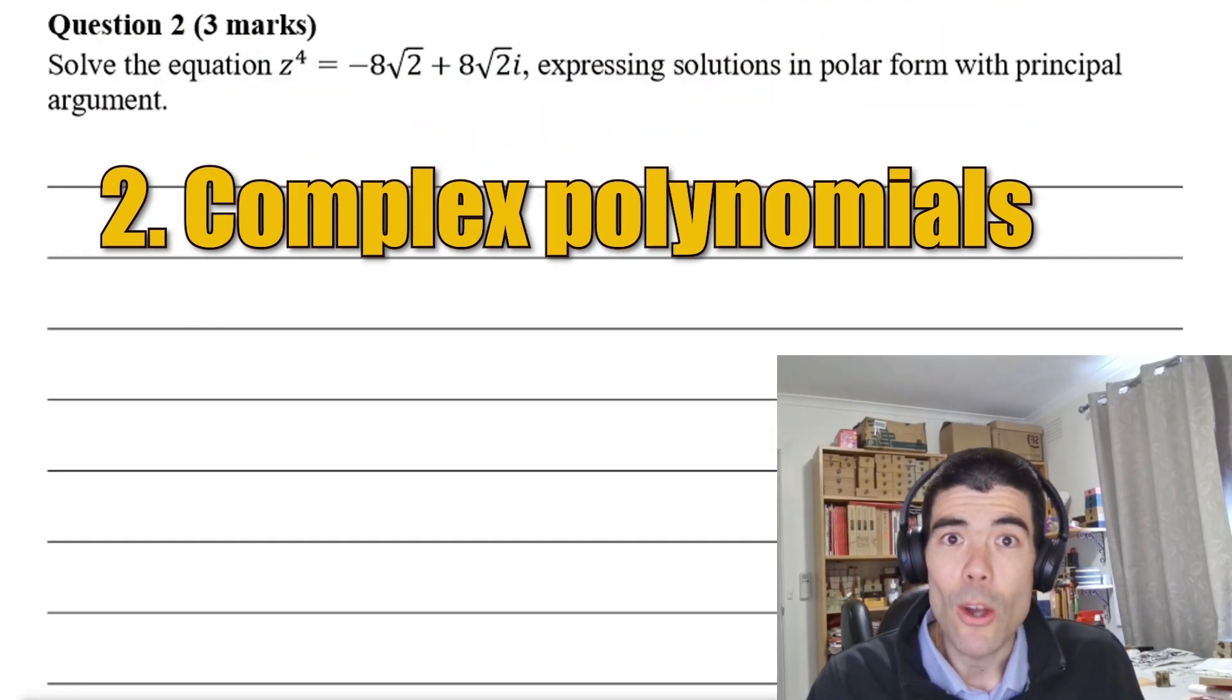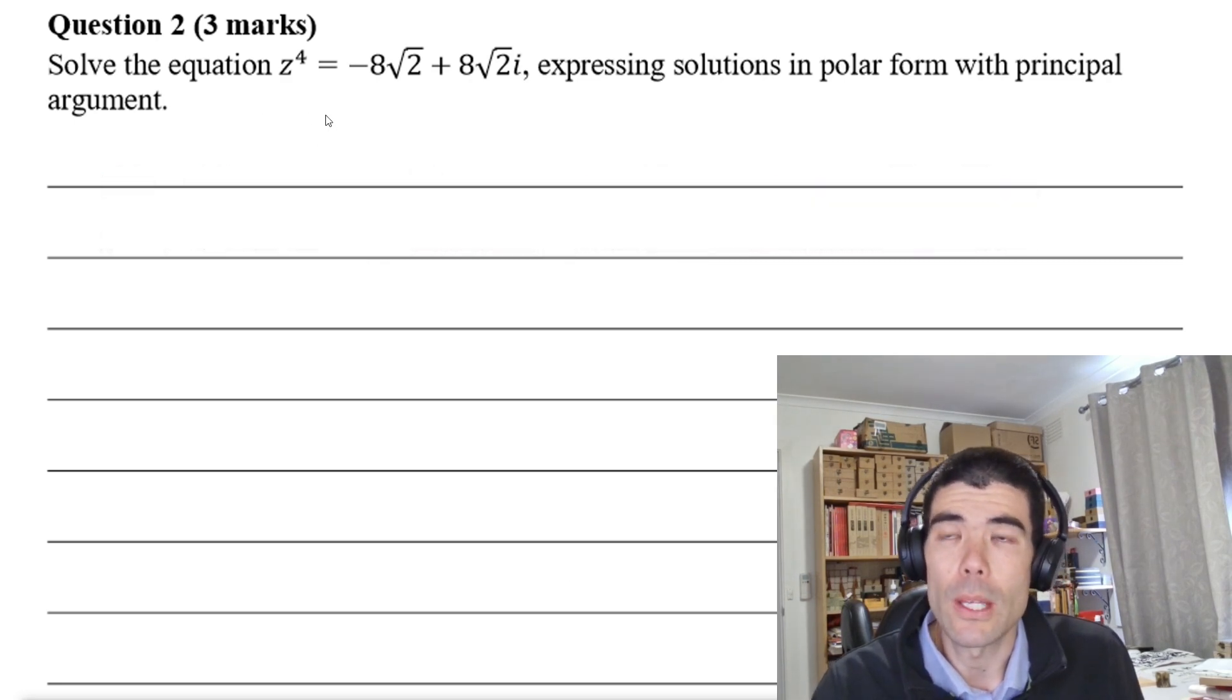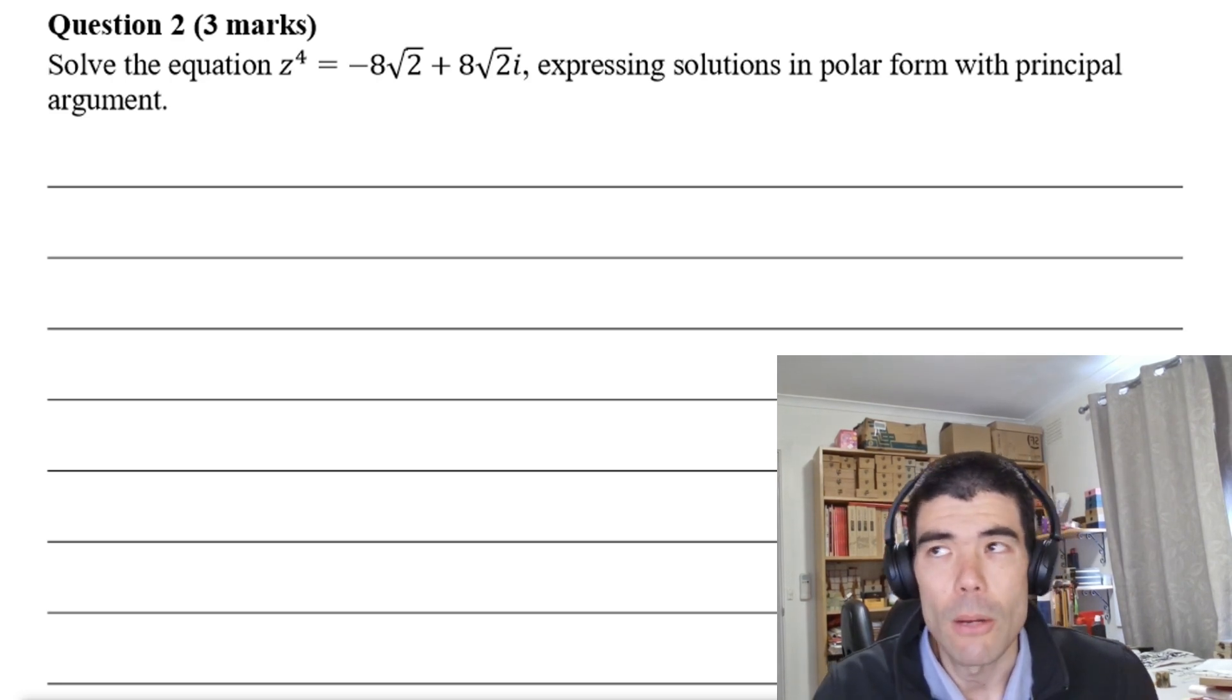Next one is solving complex polynomials. We'll look at two main types that often come up. The first is this type where we have z to the 4 equals some complex number, or find the fourth roots of some complex number. This is the case where we get the four roots equally spaced around the circle. We use polar form for these ones.